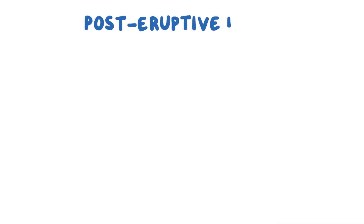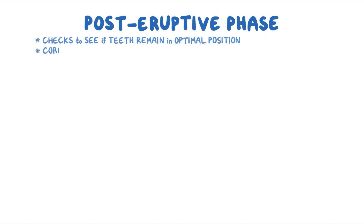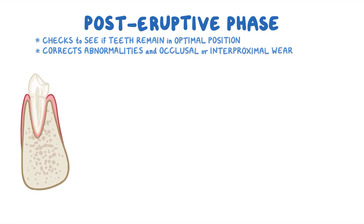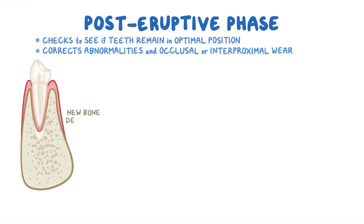Once the tooth reaches a plane of functional occlusion, the post-eruptive phase begins. It is a phase for maintaining teeth in the optimal position and correcting any abnormalities due to jaw growth and occlusal or interproximal wear. As the jaw height keeps increasing, new bone is deposited along the socket floor to maintain the height of the erupted tooth in the arch.